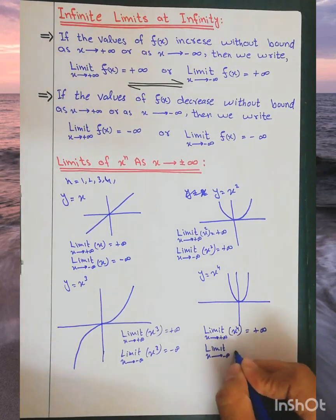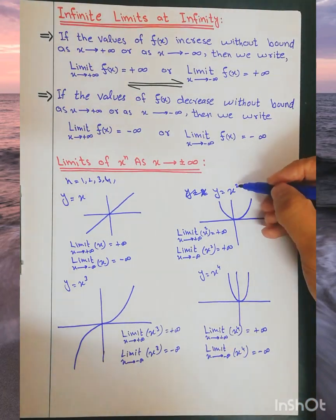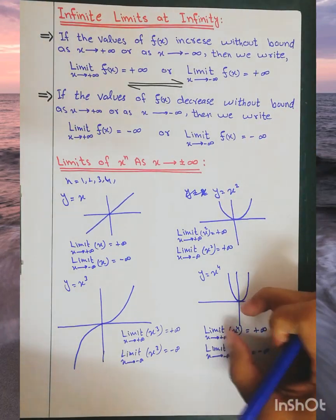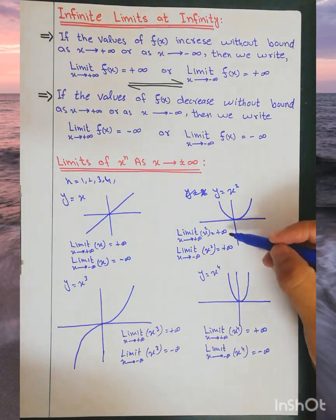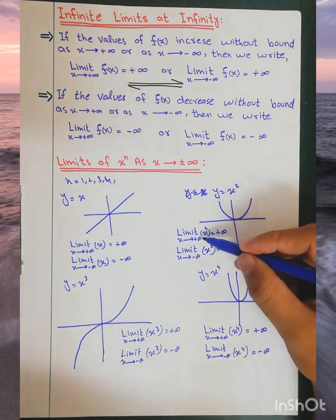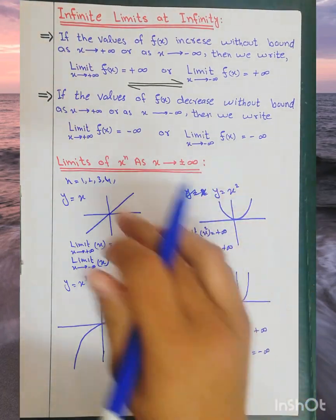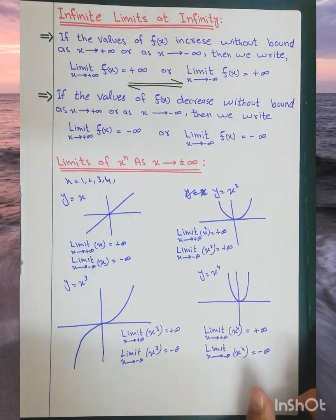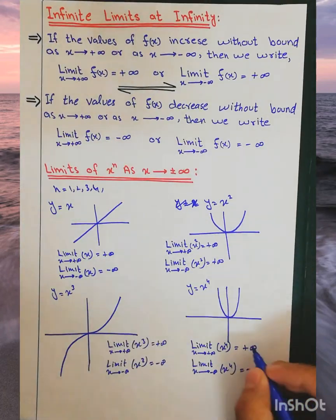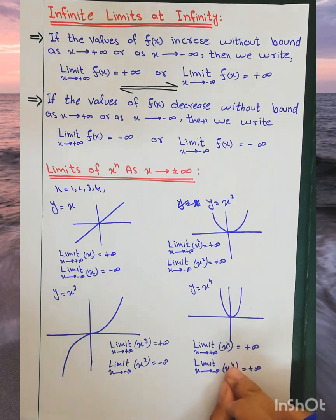The limit as x approaches negative infinity of x to the power 4 — when we report negative infinity input, x to the power 4 equals positive because it's an even power. Even if we go to a negative value, the answer must be positive. Whether we approach positive infinity or negative infinity, the answer is positive infinity. Negative infinity to an even power 4 is positive.